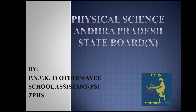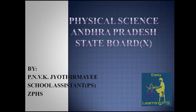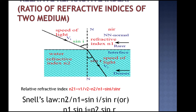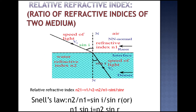Next topic: relative refractive index. The refractive index of a medium with respect to another medium is defined as the ratio of speed of light in the first medium to the speed of light in the second medium.